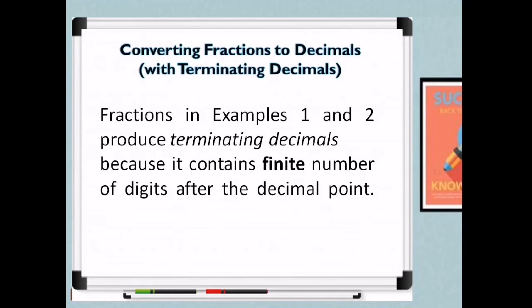Fractions in Examples 1 and 2 produce terminating decimals because they contain a finite number of digits after the decimal point. The answer stops because the remainder is 0. When we say terminating decimal, it contains a finite number of digits after the decimal point.